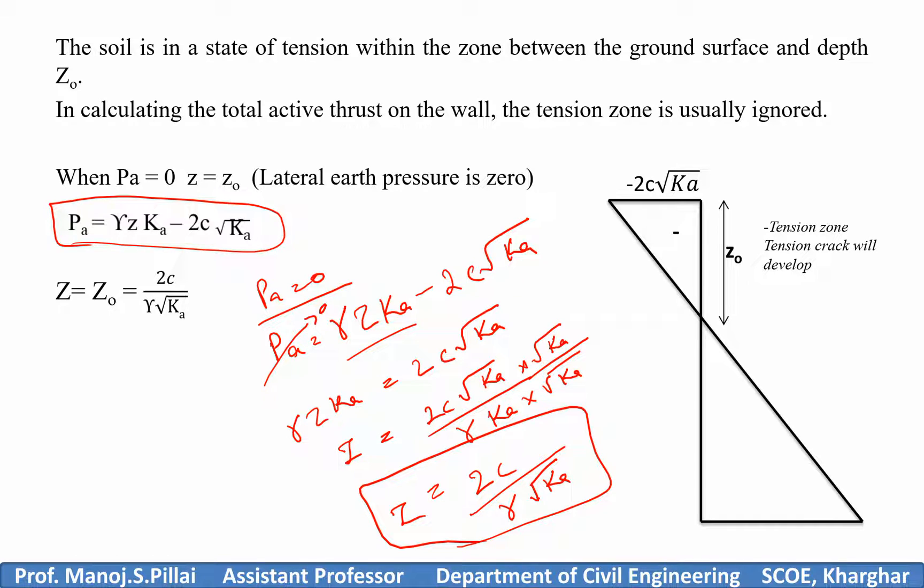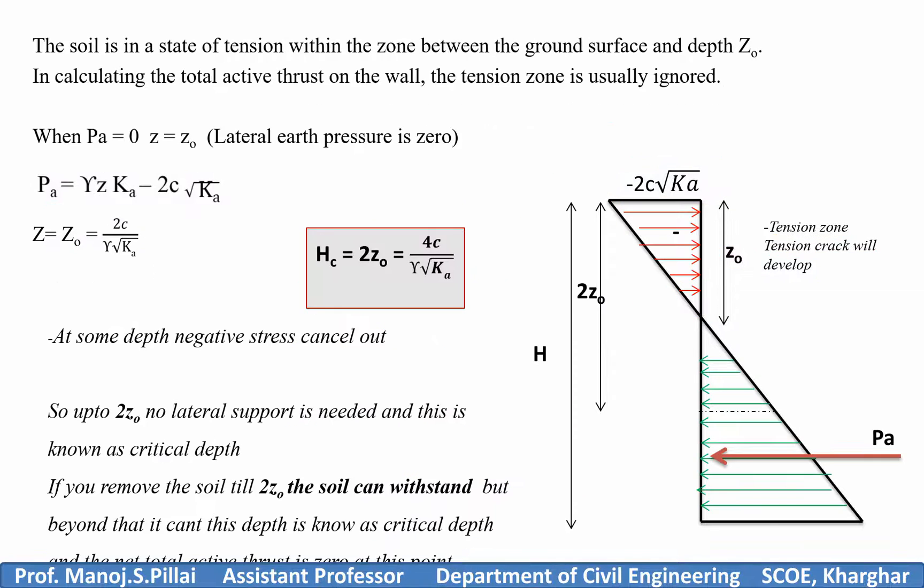This Z, when your pressure equals zero at this point, this is your Z which I have derived here. I will call this Z as Z naught. Now, in the cohesive soil active part, there is one thing: tension zone is created, so tension crack can develop. The magnitude of this tension zone is minus 2C square root of Ka, that is the second term of this equation. You can see the diagram which I have made. Tension zone is created, tension crack will develop. The magnitude is given by minus 2C square root of Ka. You have Z0 equal to this formula.